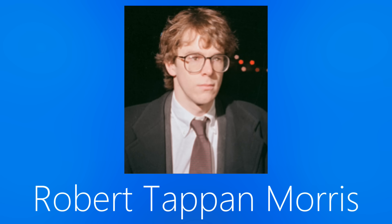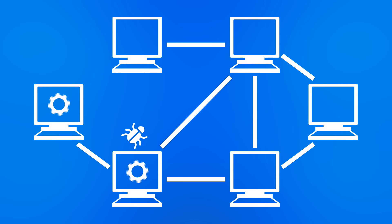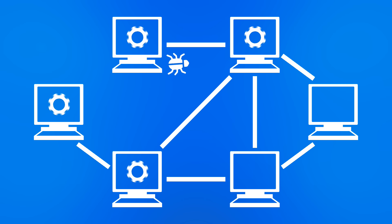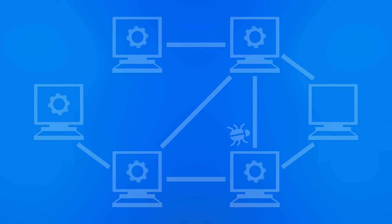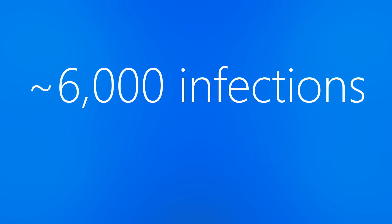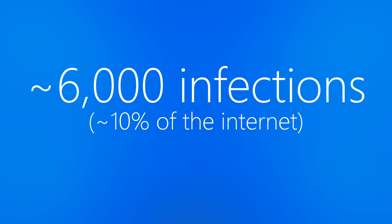One of the largest viral disasters of the time was the Morris worm, released onto the internet in 1988 by Cornell grad student Robert Tappan Morris. Allegedly intended to highlight security flaws of the academic networks it had traveled to, the worm had an inadequate mechanism to prevent a machine from being infected multiple times. Not long after, an estimated 6,000 machines would be bogged down to the point of uselessness, accounting for about 10% of the entire internet at that time.